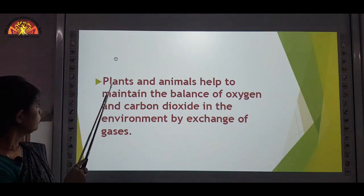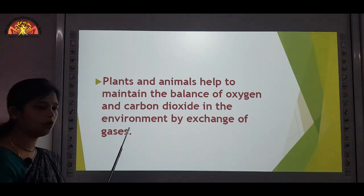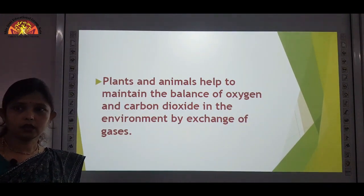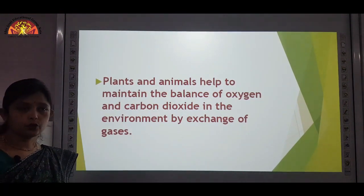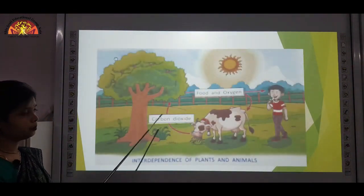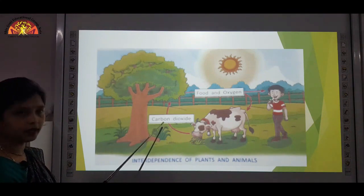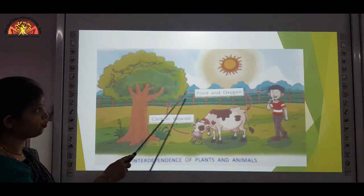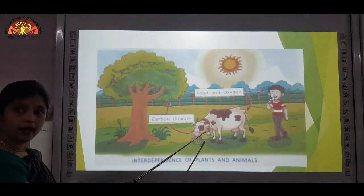Plants and animals help to maintain the balance of oxygen and carbon dioxide in the environment by the exchange of gases. Plants are giving out oxygen and animals are giving out carbon dioxide, so the balance is maintained. Animals use the oxygen and plants use the carbon dioxide. Human beings and animals give out carbon dioxide by the breathing process, and the tree takes this carbon dioxide and in presence of sunlight, prepares food and gives out oxygen, which is again used by humans and animals for breathing.